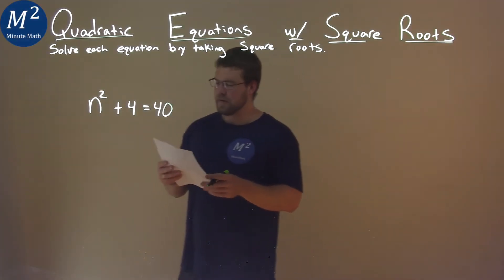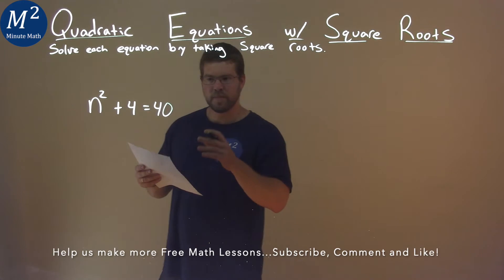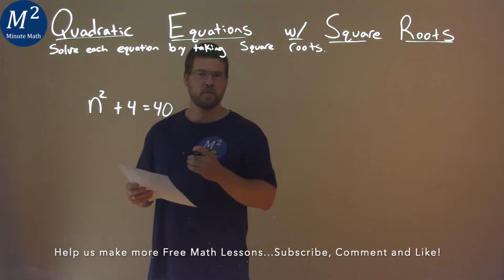We're given this problem right here: n squared plus 4 equals 40, and we have to solve this by taking some square roots.